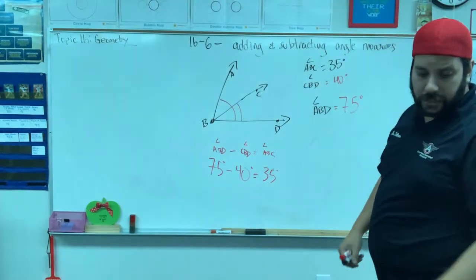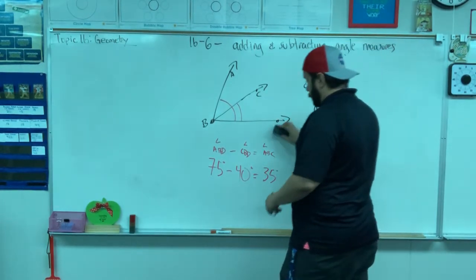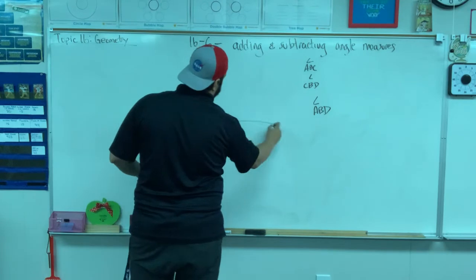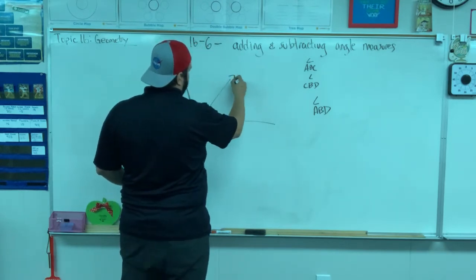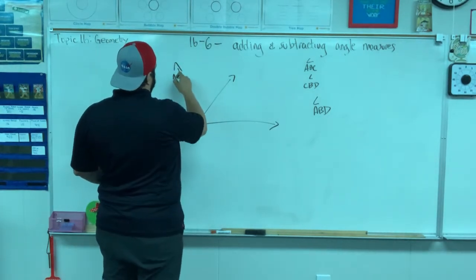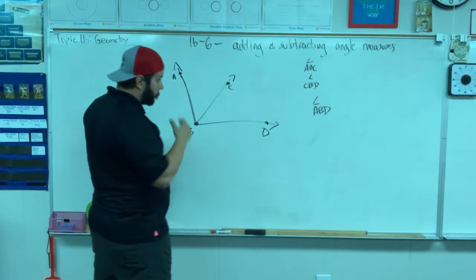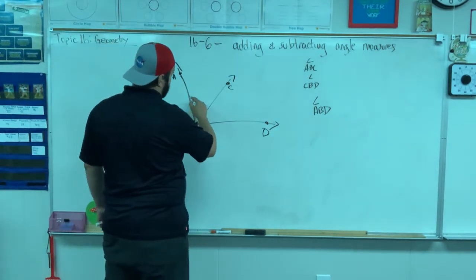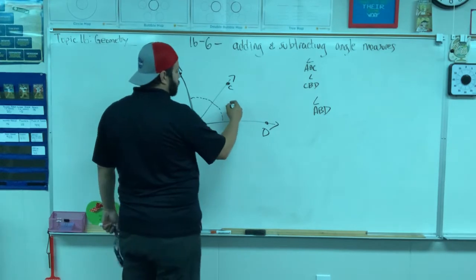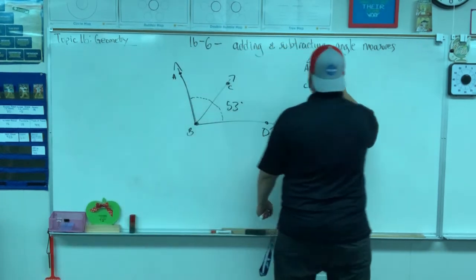So you've got to take what you know to figure out what you don't know, and that's common, we always do that. Now let's look at another example. I'm going to keep the same names because that doesn't change. But I'm going to make a bigger angle, this one is overall greater than 90 degrees. What do we call that? Obtuse, yes.